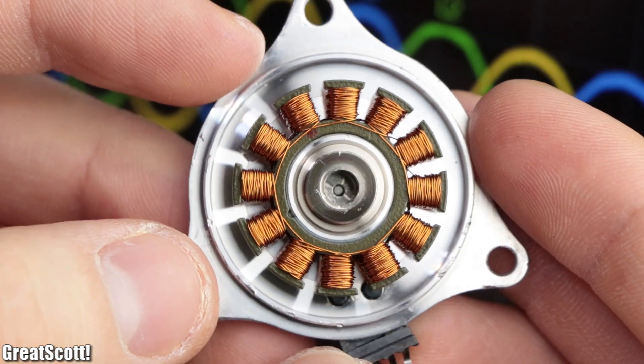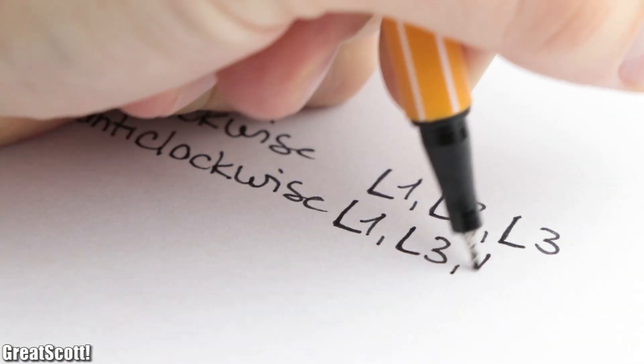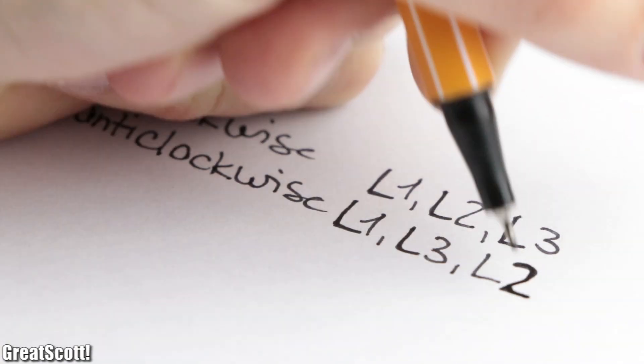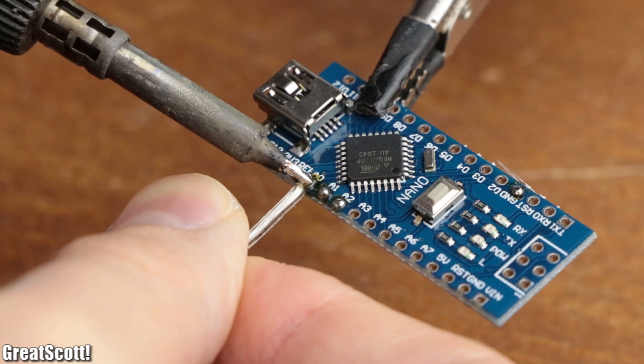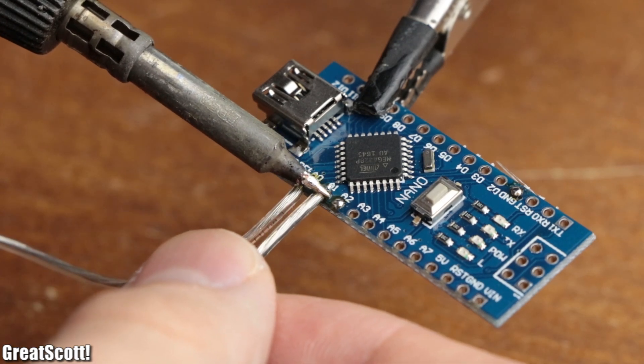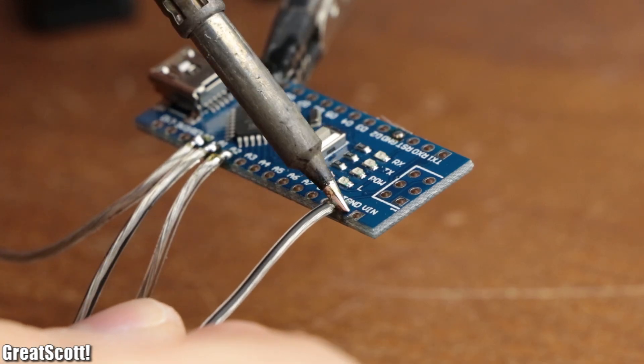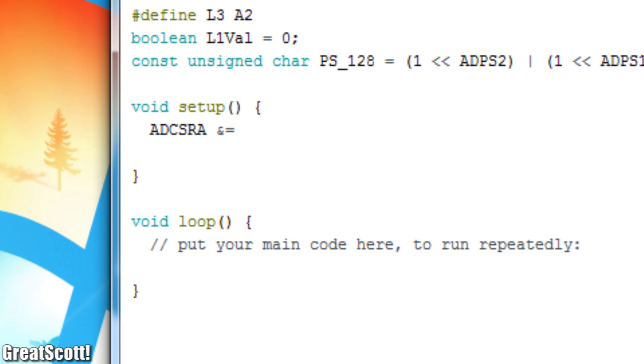The reason for that is the coil arrangement itself, which enables us to determine the rotational direction by checking in which order the voltages appear. To do that I connected L1, L2 and L3 to analog inputs 0, 1 and 2 respectively, and the star point of the BLDC motor to ground of an Arduino Nano.